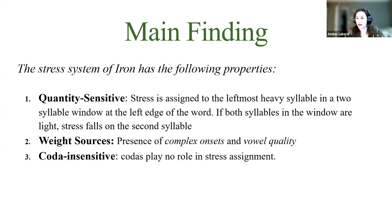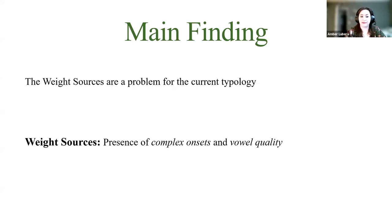The main finding is that the stress system of Iron Ossetian has three properties: first, it is a quantity-sensitive language where stress is assigned to the leftmost heavy syllable in a two-syllable window at the left edge of the word; if both syllables in that window are light, stress falls on the second syllable. Second, weight sources include the presence of complex onsets and vowel quality. Third, the language is coda-insensitive — codas play no role in stress assignment.